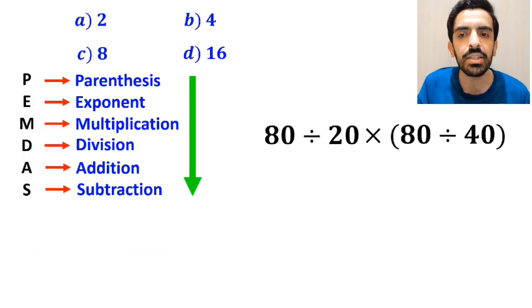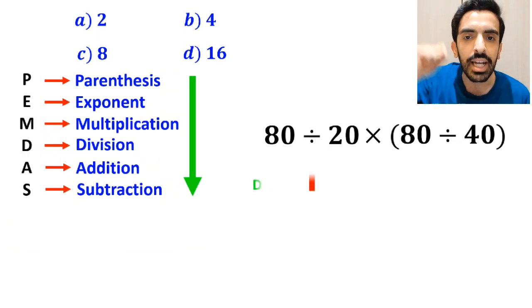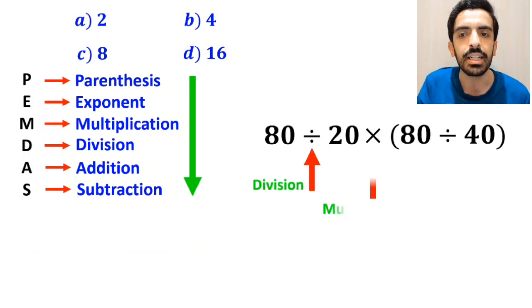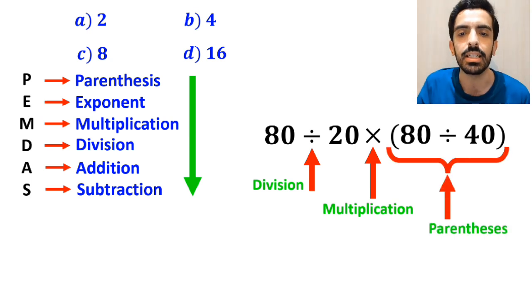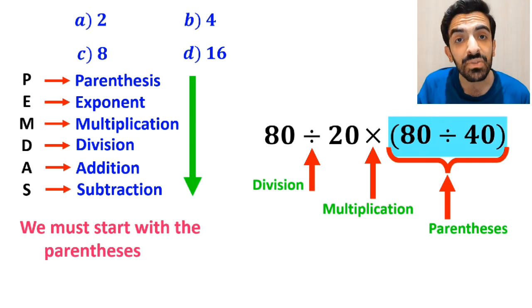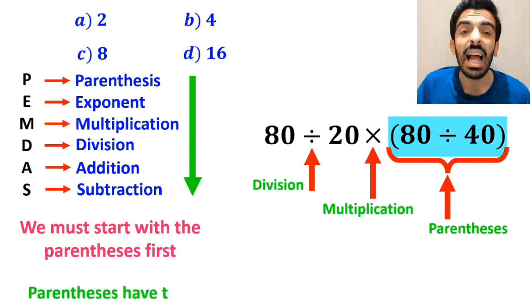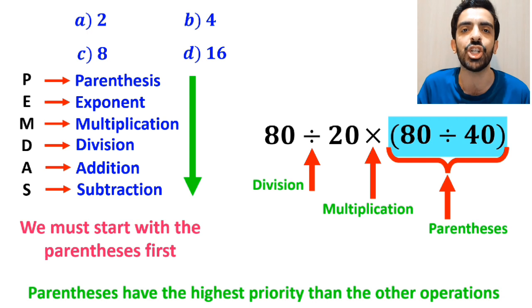As you can see on the screen in this expression, first we have a division sign, then a multiplication sign, and finally parenthesis. According to the PEMDAS rule, we must start with the parenthesis first because parenthesis have the highest priority compared to the other operations.